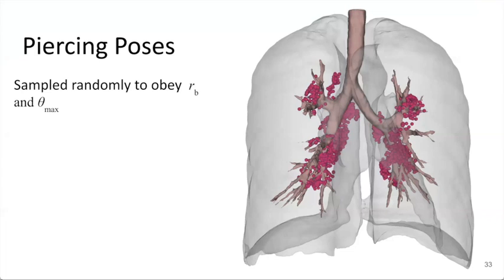Each of these points serves as a starting pose for the needle. And now that we have these starting poses, we want to determine all the places we can reach. To do so, we use motion planning, which allows us to explore the reachable space in an efficient way while obeying the system's constraints and avoiding obstacles.